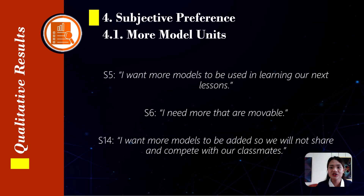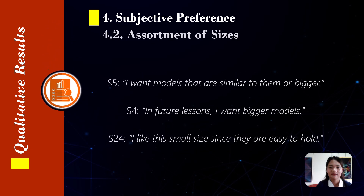The fourth main theme pertains to students' subjective preferences toward the 3D models. The first sub-theme refers to more model units. Students expressed a strong desire for more units of models, stating that having additional models would enhance their understanding of the lesson. A student suggested having more models with articulated movements. Another relayed that sharing and competition would not occur if more models were available. The second sub-theme refers to the models' assortment of sizes. Students had varying preferences for the size of models. Some preferred larger models, others liked smaller ones, with one mentioning that smaller models were easier to hold.